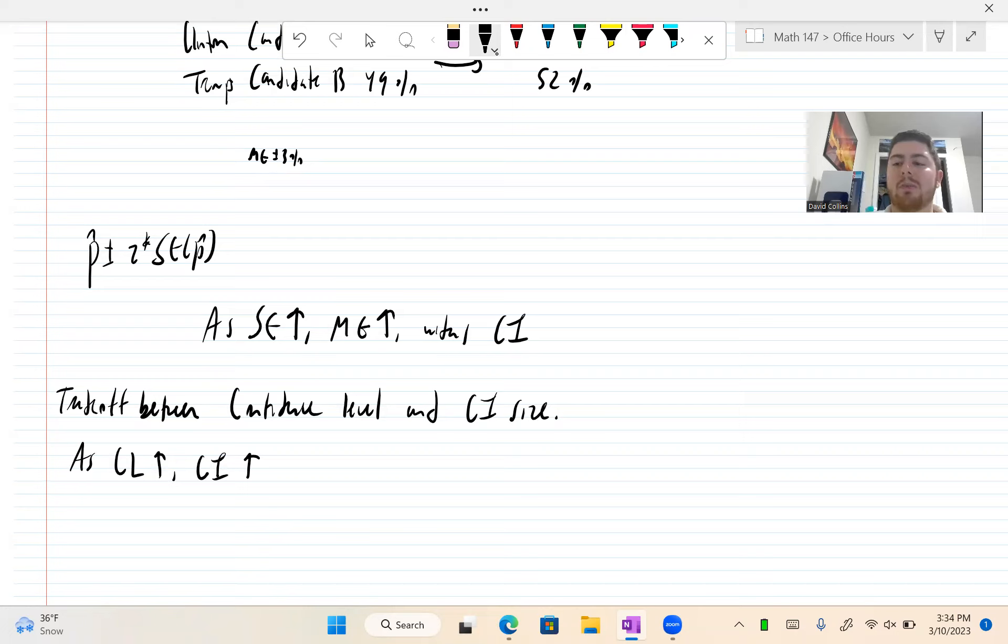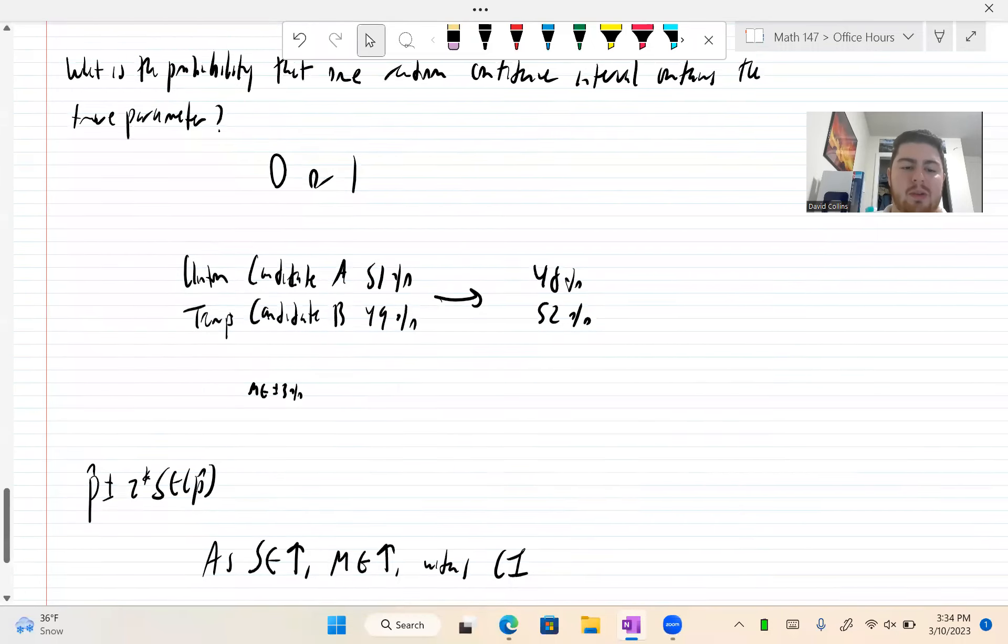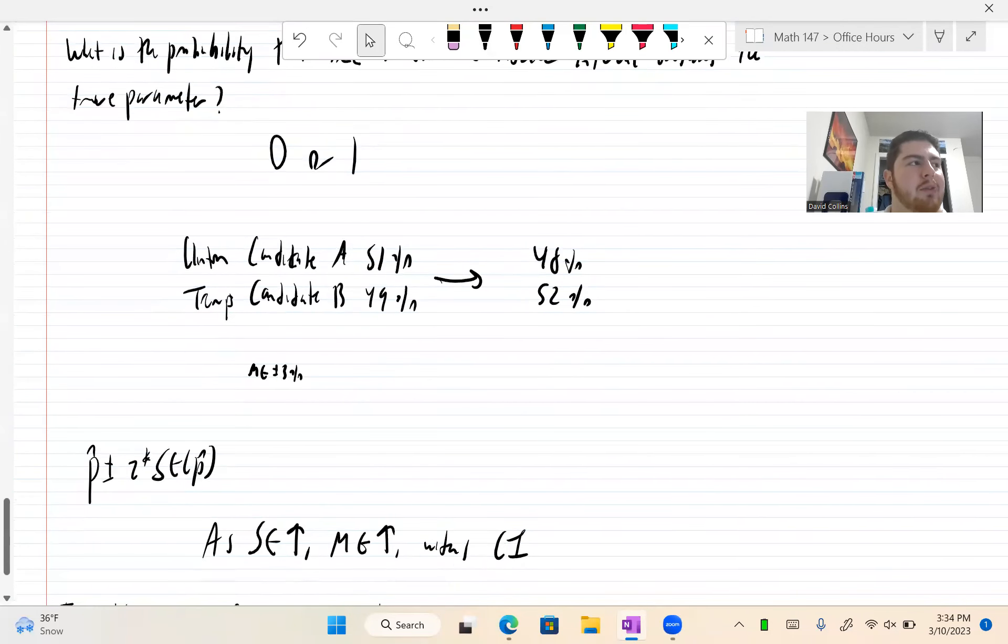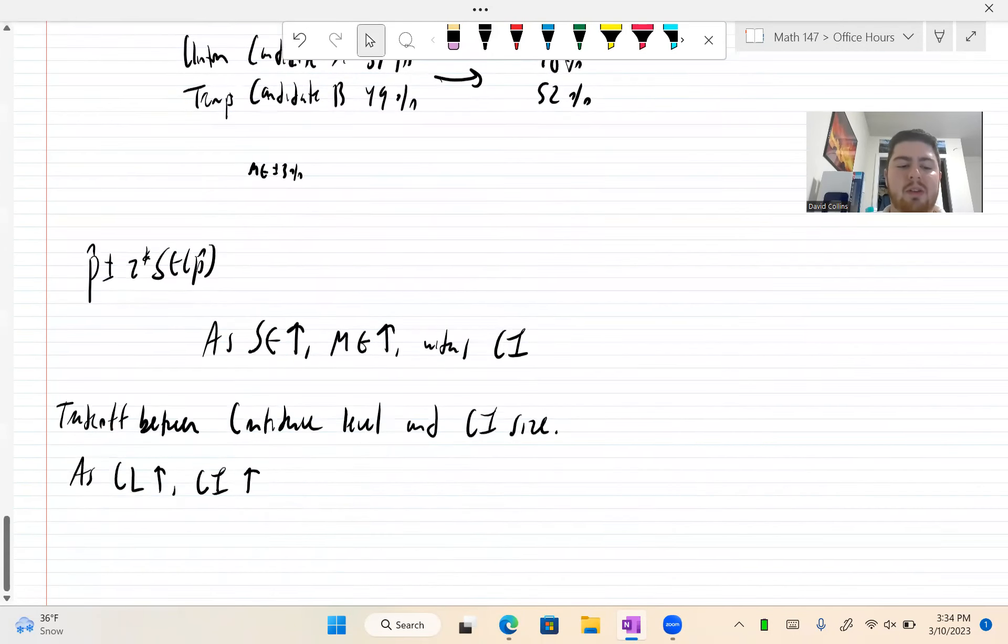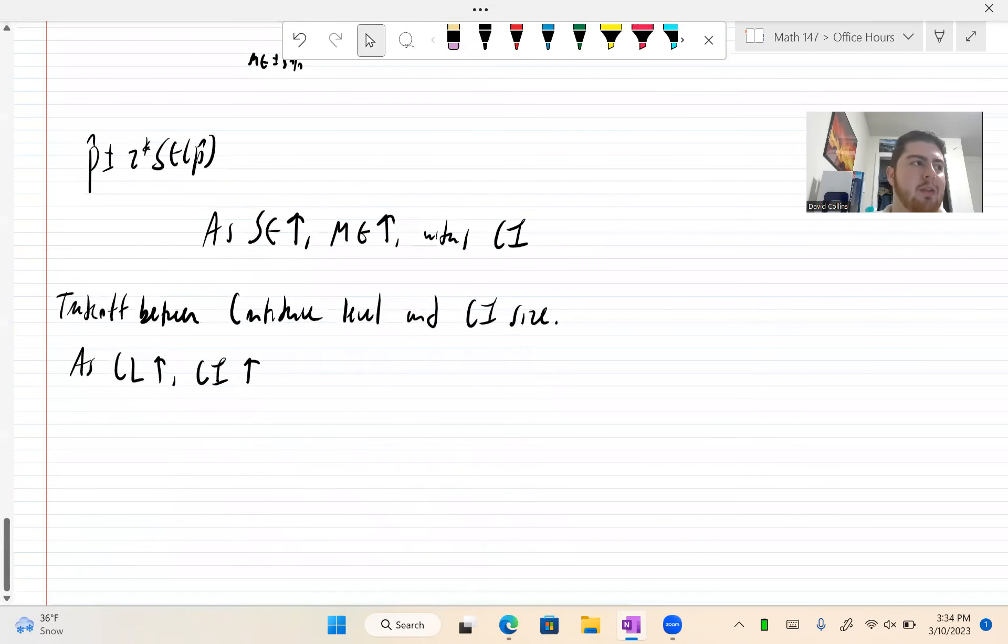As the confidence level increases, the confidence interval gets bigger, because that's our Z critical. We're multiplying by a positive number. So, sure, it'd be nice to have a 99.999% confidence interval. We can do that. It's a Z of around 4.0. But it's going to be a huge interval. For this poll, it might be a margin of error of 10%, which is basically pointless. So there's a tradeoff.